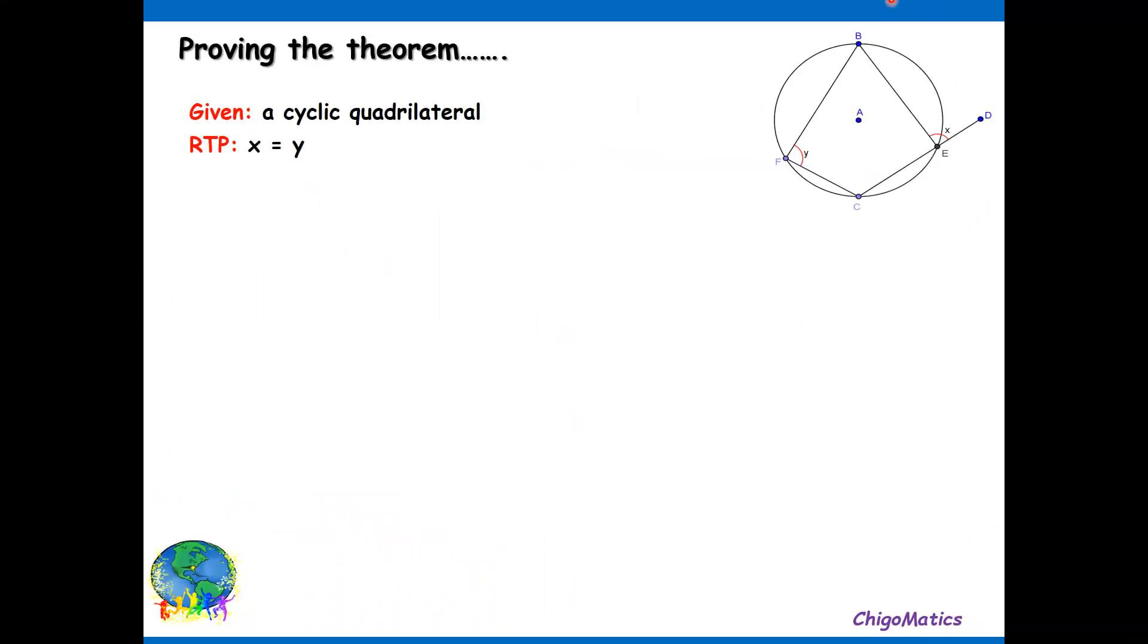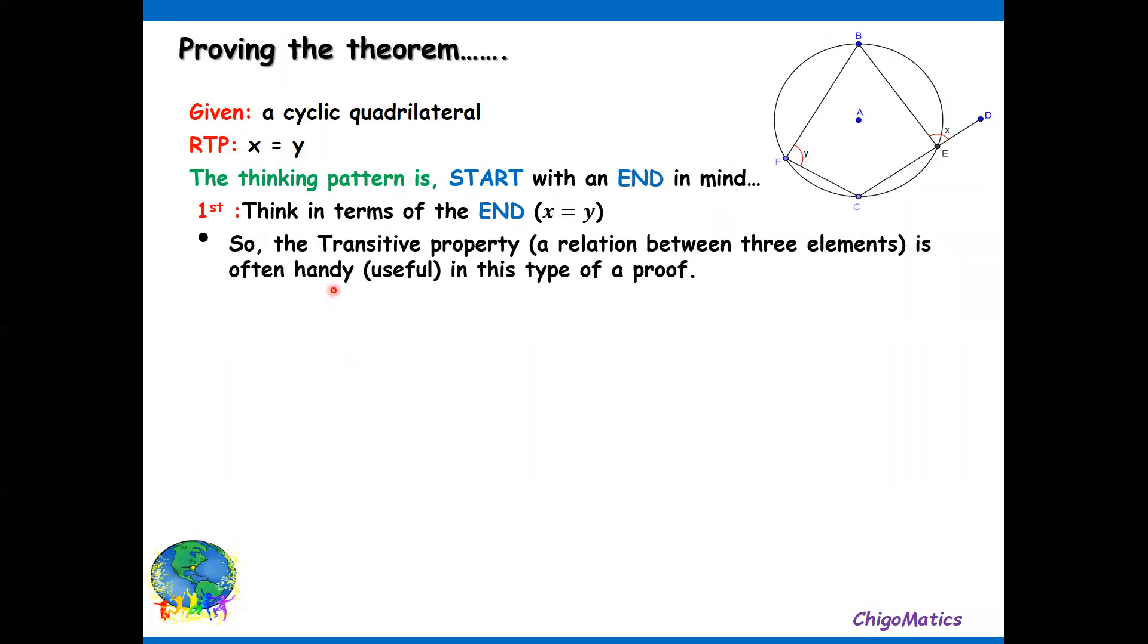Proving the theorem: we are given a cyclic quad and we are required to prove that x equals y. Here is the exterior angle x and y. We want to prove that they are equal. The thinking pattern starts with an end in mind. Firstly, think in terms of the end which is x equals y, which is what we want to prove. The transitive property relationship between three elements is often handy in this type of proof.